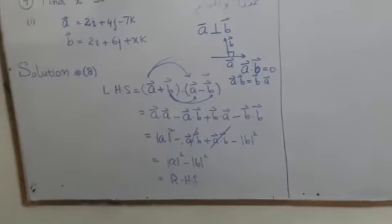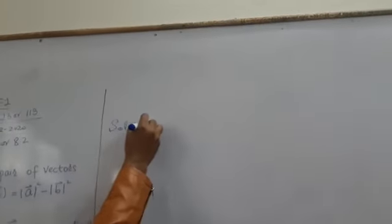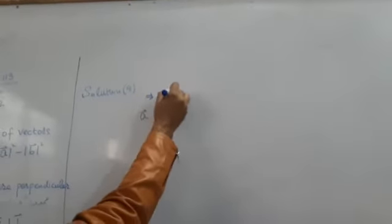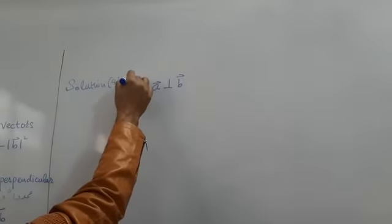Now we have the next solution. If we see vector A perpendicular to vector B, this is given.